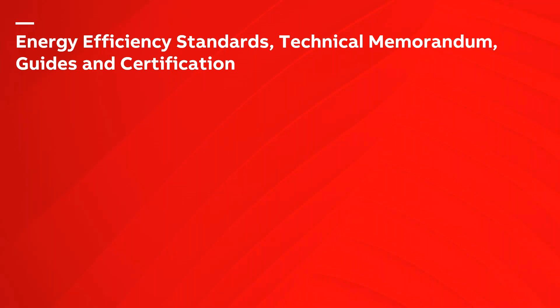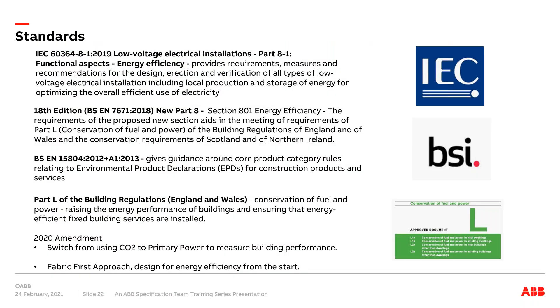So what's going to make this happen? Energy standards, technical memoranda, guides and certification. The IEC 60364-8-1:2019 standard — Low Voltage Electrical Installations, Part 8.1, Functional Aspects of Energy Efficiency — stipulates requirements, measures and recommendations for the design, erection and verification of all types of low voltage electrical installations, including local production, storage of energy, optimisation and overall efficient use of electricity. In the UK we've adopted the IEC standard and incorporated it into BS 7671, the 18th edition. There is a new Part 8, not yet published, which will follow through from an energy efficiency point of view and will probably mirror IEC 60364.